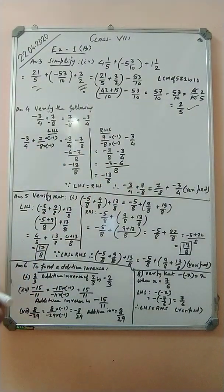Now Question Number 6: find the additive inverse. The additive inverse is simply the negative of the given number. For 2/3, the additive inverse is minus 2/3. For minus 15/(minus 11), first convert to standard form by multiplying minus 1: it becomes 15/11, so its additive inverse is minus 15/11. For 8/(minus 29), converting gives minus 8/29, so its additive inverse is 8/29.